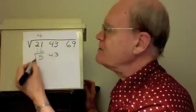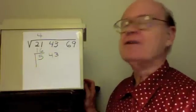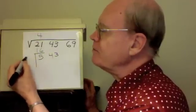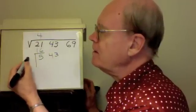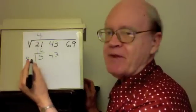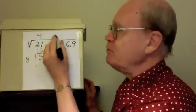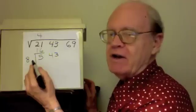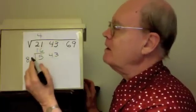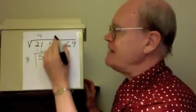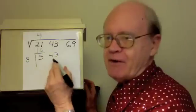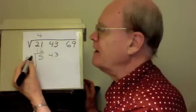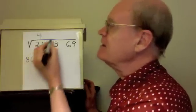Now I need a divisor. To get the divisor, I double what's up here, the 4. That's 8. It's going to be 80 something times some numeral here. It has to be the same numeral here as here. 87 times 7 is bigger than 543, that's too big. But 6 will work. 86 times 6.